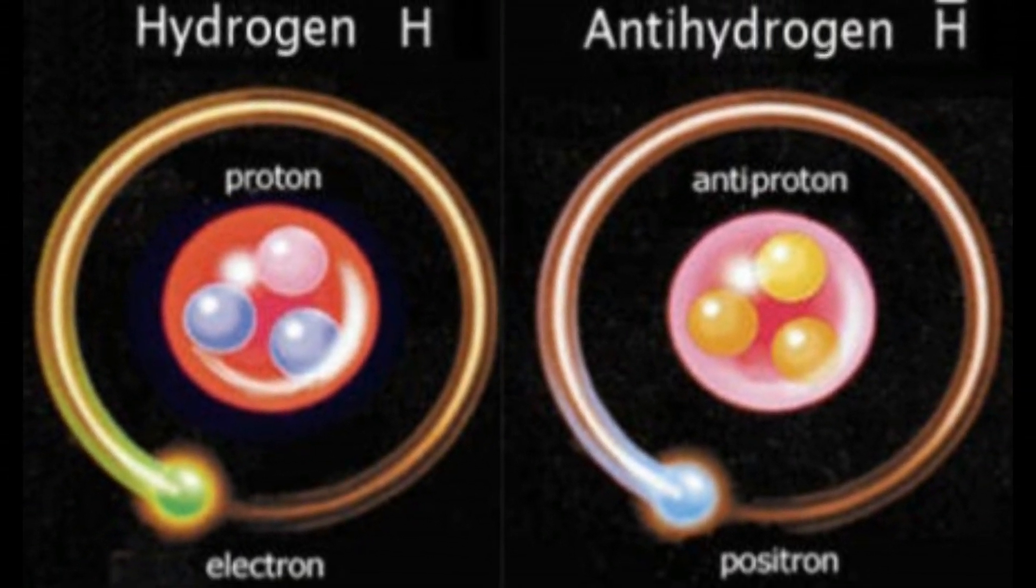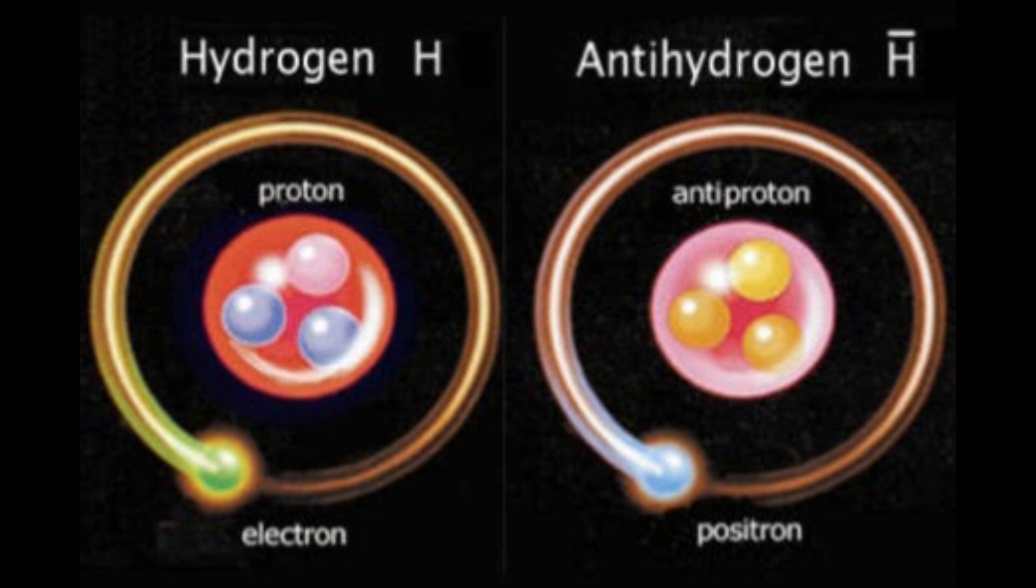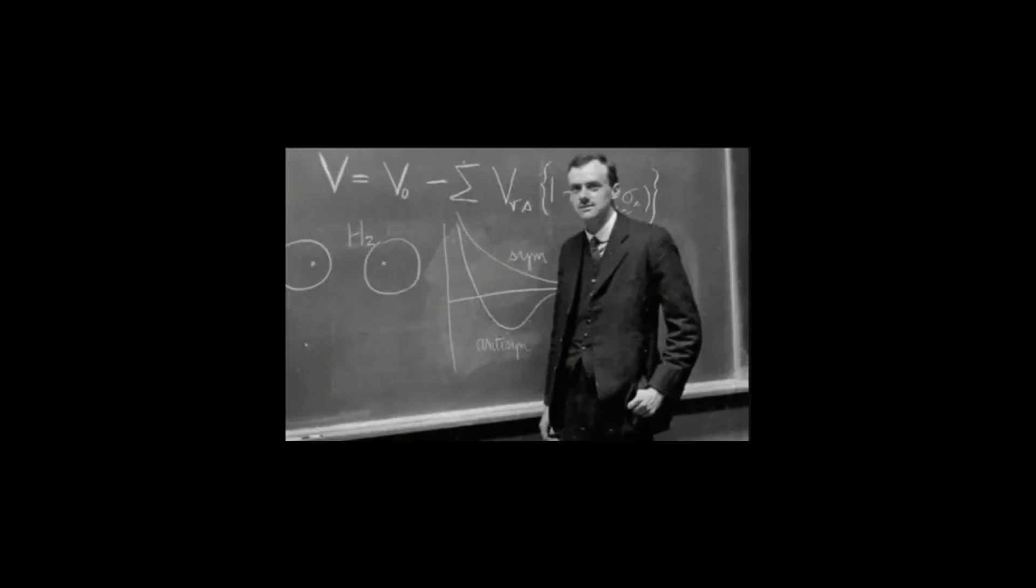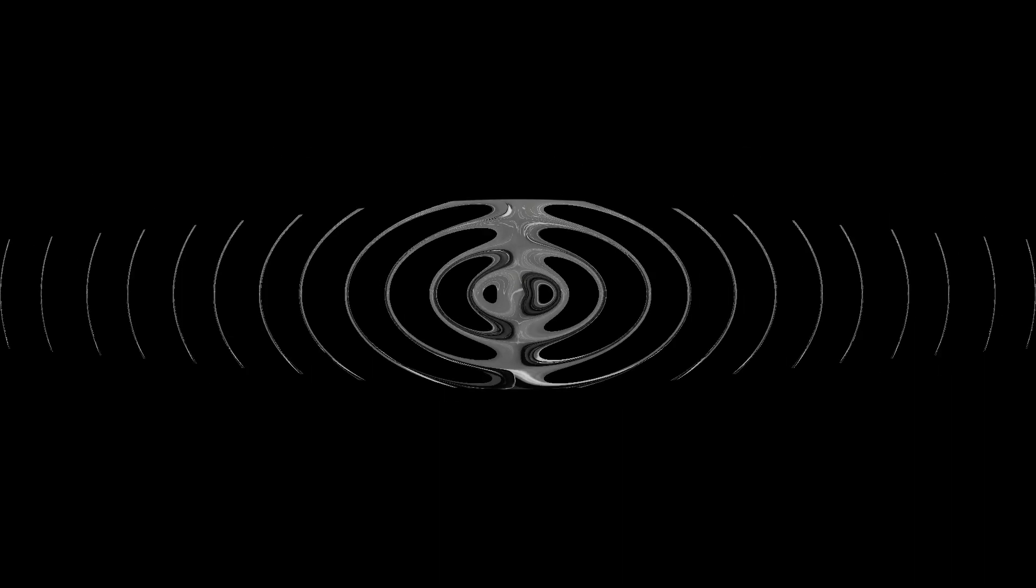Let me first tell you what antimatter is. It's just like normal matter but with the opposite charge. Famous physicist Paul Dirac proposed its idea way back in 1964 and he predicted matter of opposite charge as a solution to the Dirac equation.